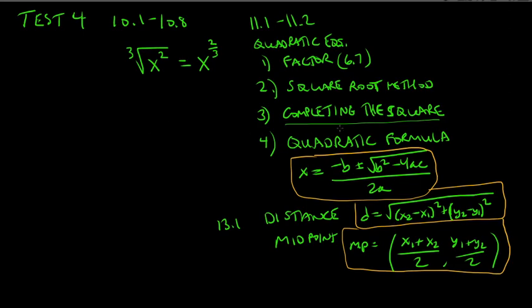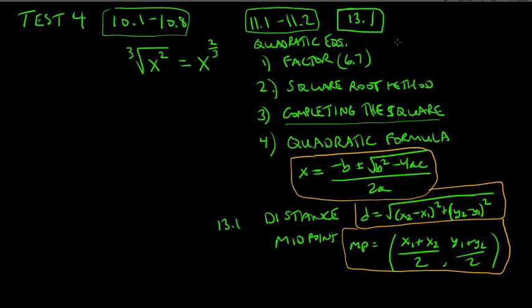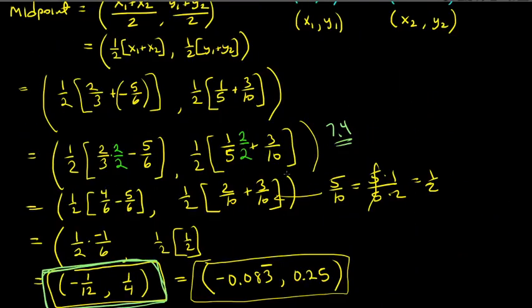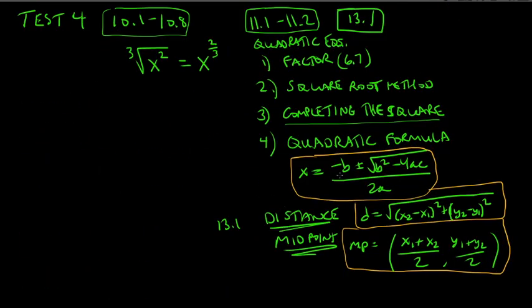To summarize: test 4 covers everything in chapter 10 (10.1–10.8), chapter 11 sections 11.1 and 11.2 only, and from chapter 13 only section 13.1 — specifically distance and midpoint, not circles or other topics. You only need to know how to use the distance and midpoint formulas. That's test 4. I hope that helps. Best of luck.